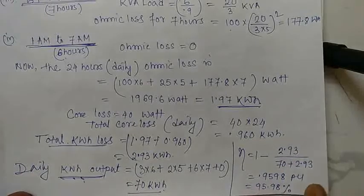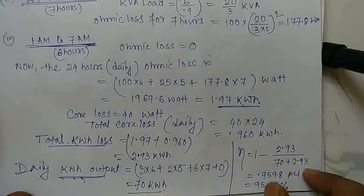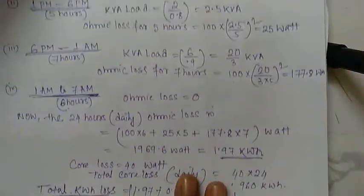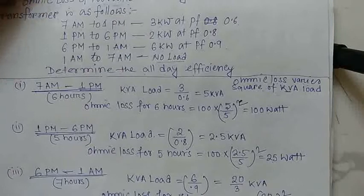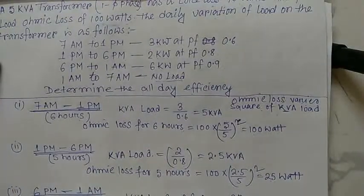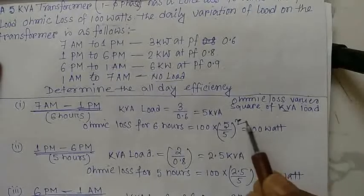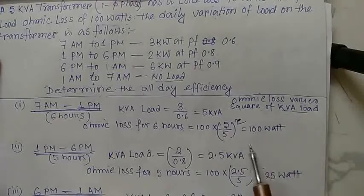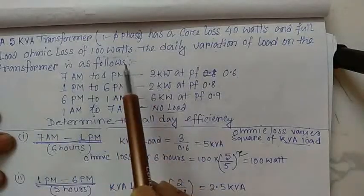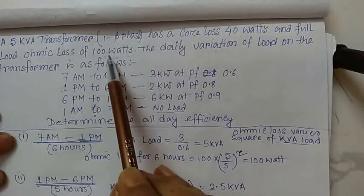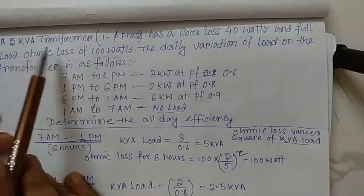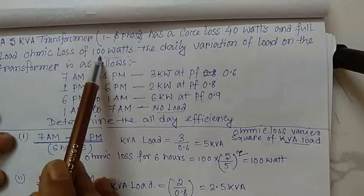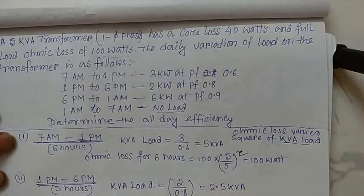The all-day efficiency of this single-phase transformer is 95.98 percent. Students, remember one key thing: the ohmic loss varies as the square of the kVA load, and the full load ohmic loss is 100 watts at 5 kVA.